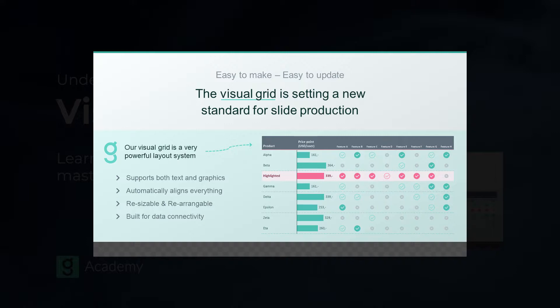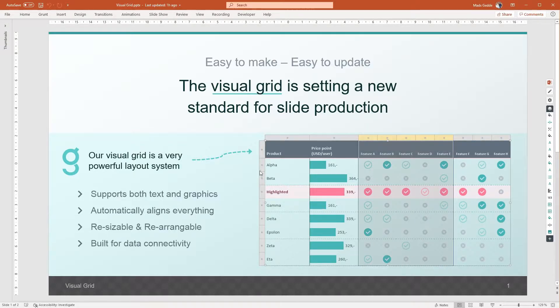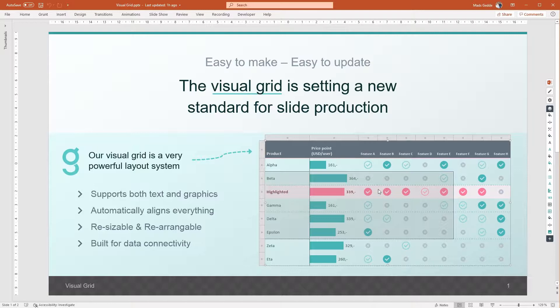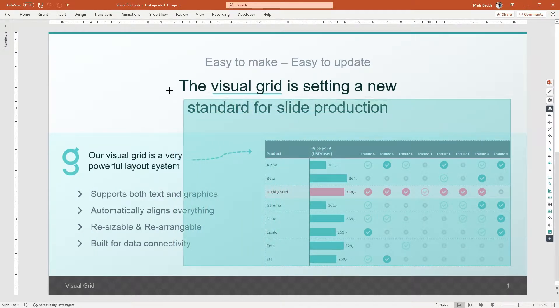We often call the visual grid a grunt, for simplicity, unless we need to be specific. You can see that the grunt has a custom user interface when it's selected. Most of your interaction with grunt will happen directly in the slide with this user interface. You can choose to scale up your grunt by dragging the handles surrounding it. If you hold the shift key on your keyboard, the grunt will keep its ratio while scaling.